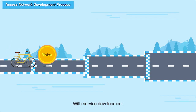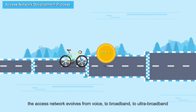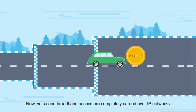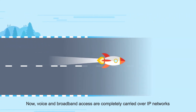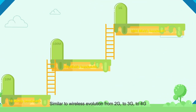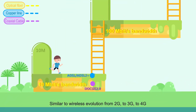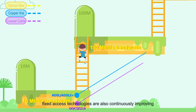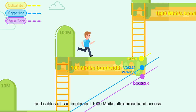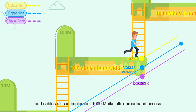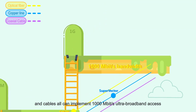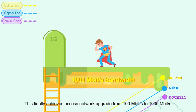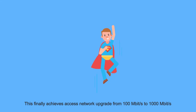With service development, the access network evolves from voice to broadband to ultra-broadband. Now, voice and broadband access are completely carried over IP networks. Similar to wireless evolution from 2G to 3G to 4G, fixed-access technologies are also continuously improving. Optical fibers, twisted pairs, and cables all can implement 1000 Mbps ultra-broadband access, achieving access network upgrade from 100 Mbps to 1000 Mbps.